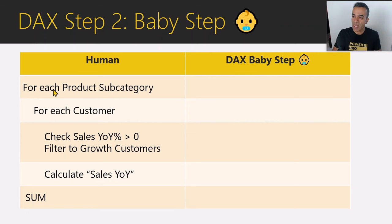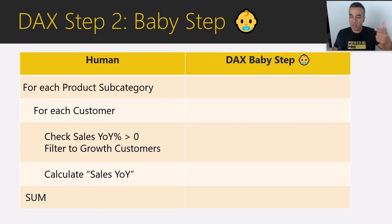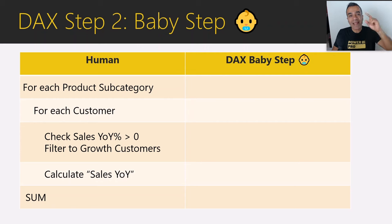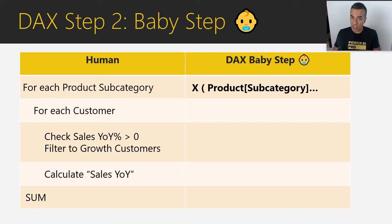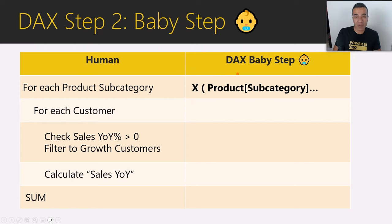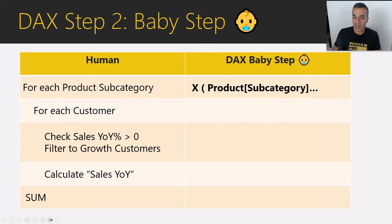The first human step was 'for each product subcategory.' Whenever you find yourself thinking 'for each,' think row by row — you're going subcategory by subcategory, row by row. That is an iterator, and it's represented in Power BI with the letter X. There's a whole family of these — SUMX, MINX, MAXX, AVERAGEX, COUNTX, and many more. So in baby DAX, I'm going to write 'X iterate over the product subcategory,' and then 'X customer' for the next iteration.